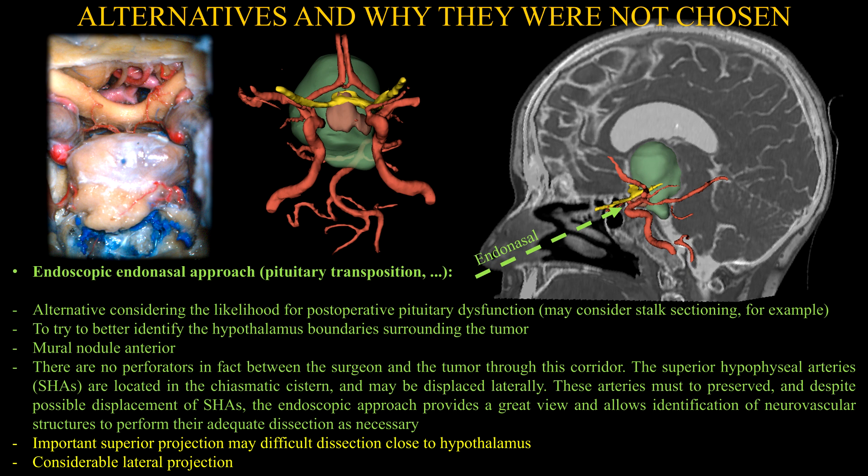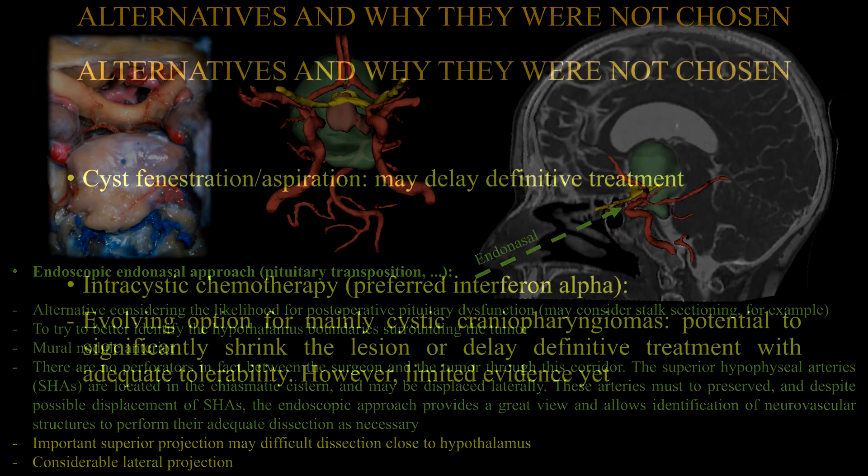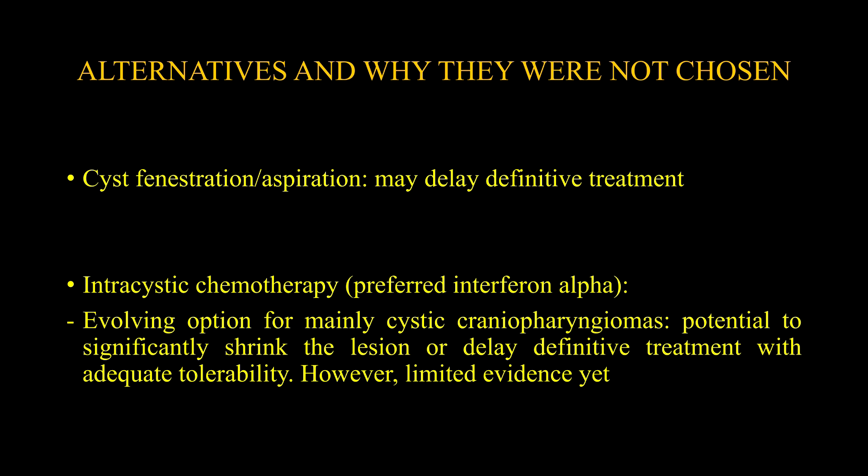The superior hypophyseal arteries lie in the chiasmatic cistern, usually lateral to the mass and may be displaced laterally. Other alternatives to minimize endocrinological disturbances include cyst fenestration and aspiration with resection of the solid component, which would delay definitive treatment. Alternatively, a catheter could be inserted into the cyst with an Ommaya reservoir to administer cycles of interferon alpha, which could shrink the lesion, though there is still limited evidence.